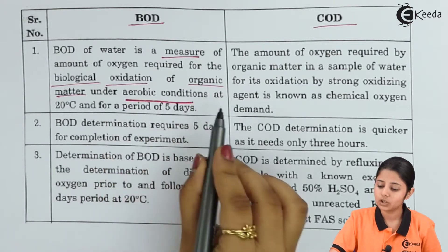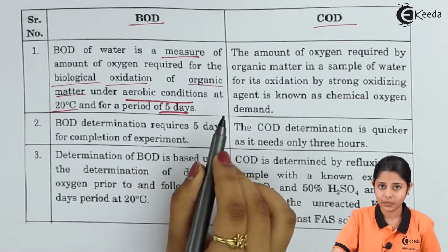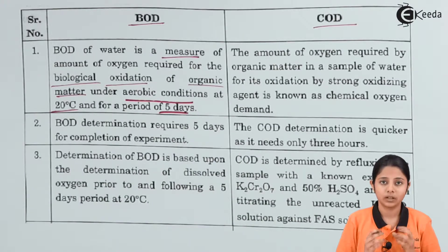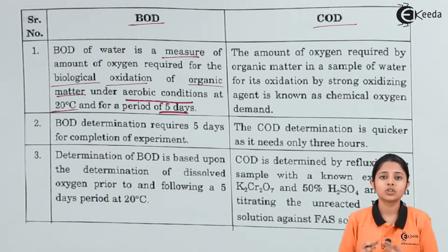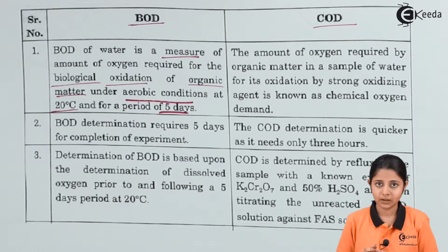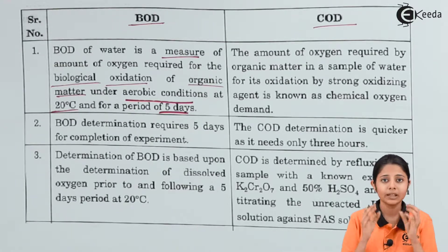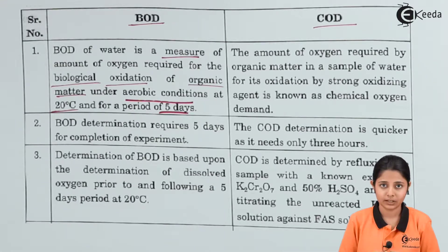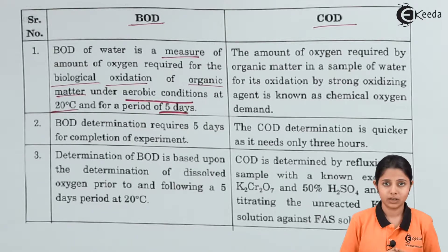This is measured under aerobic conditions at 20 degrees Celsius for a period of 5 days. Now why do we have aerobic conditions? There are two kinds of conditions: aerobic conditions and anaerobic conditions. Aerobic bacteria are those bacteria which need oxygen for their growth and survival. Anaerobic bacteria are those bacteria which do not need oxygen for their growth and survival.